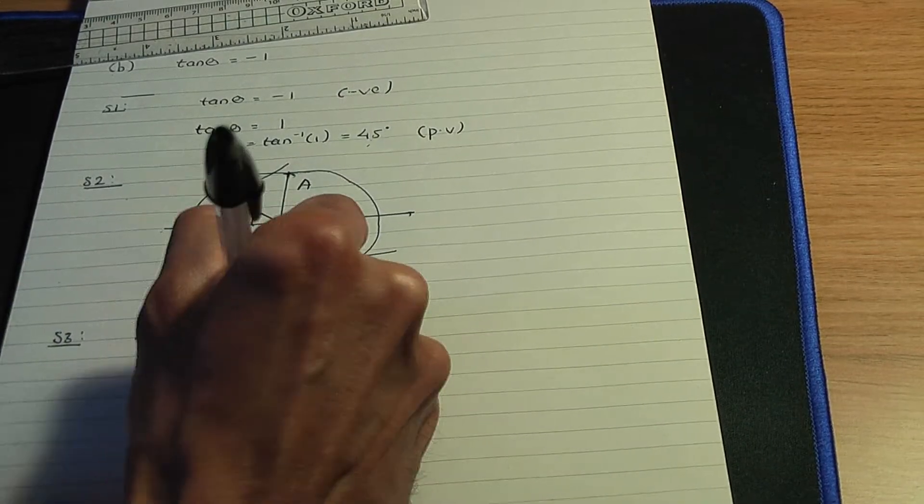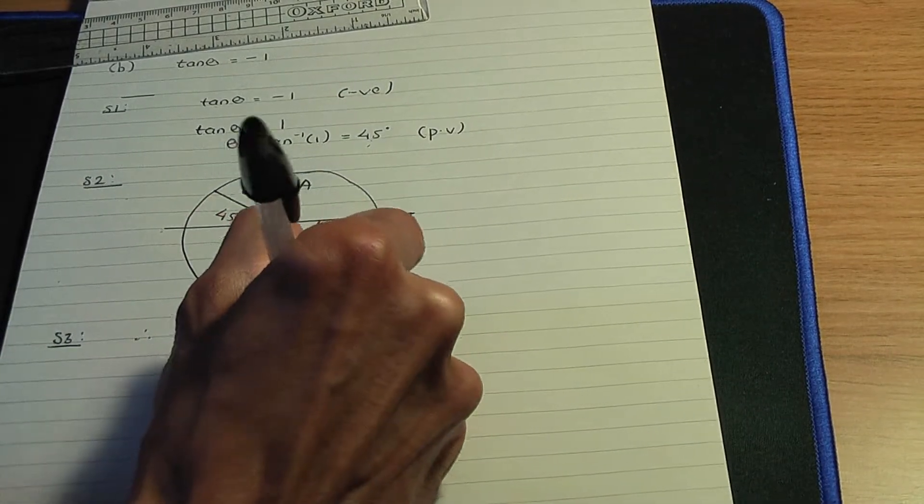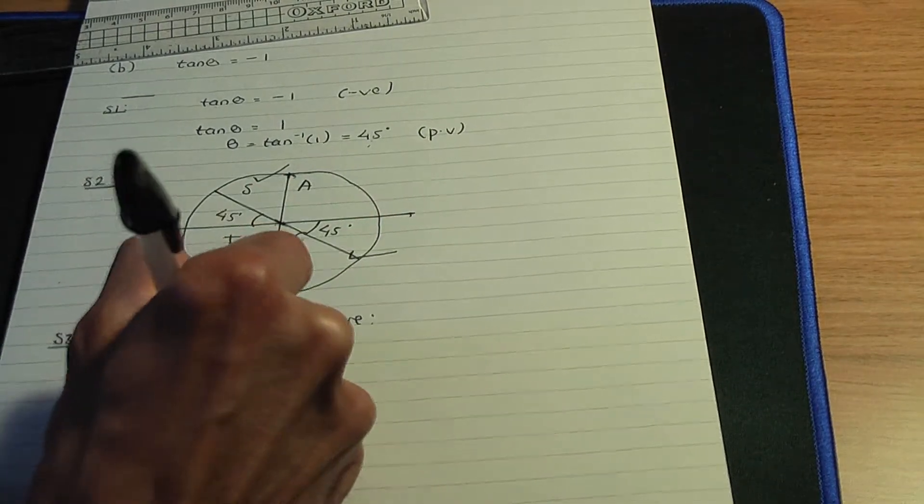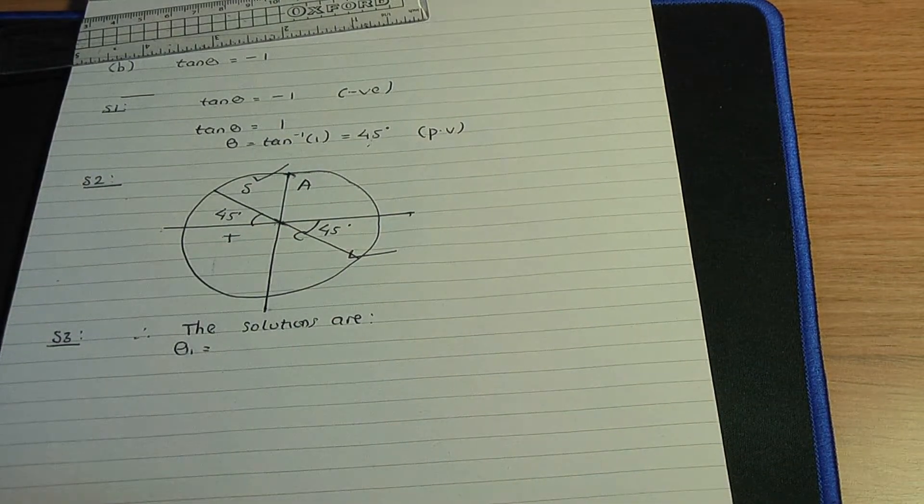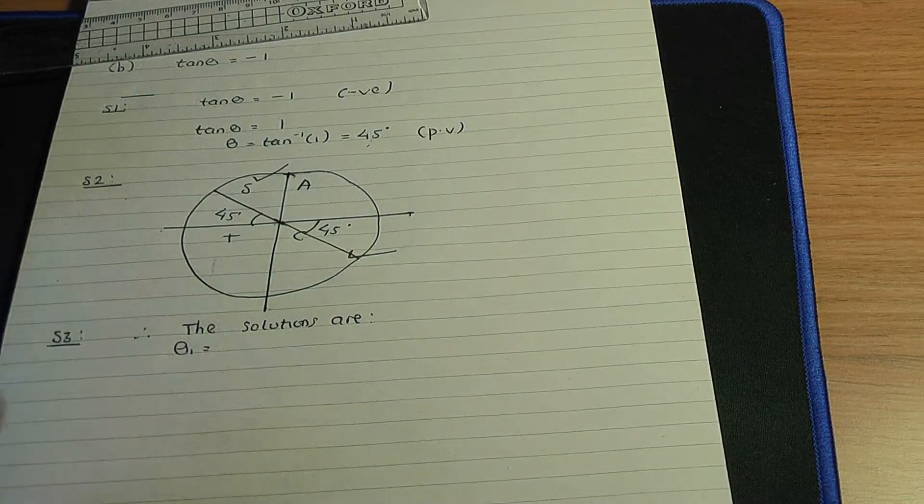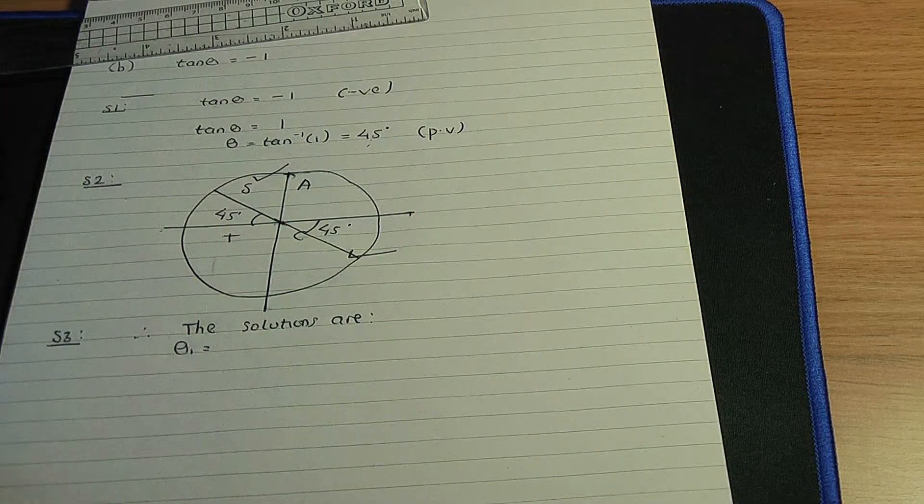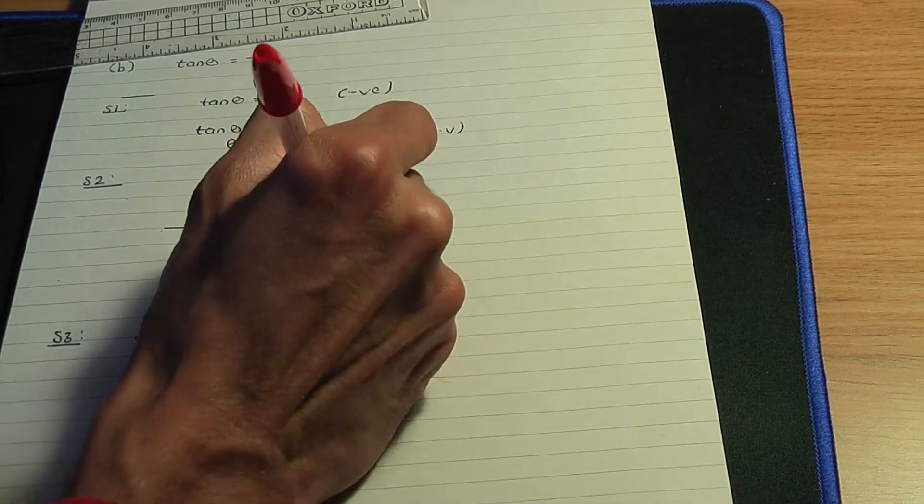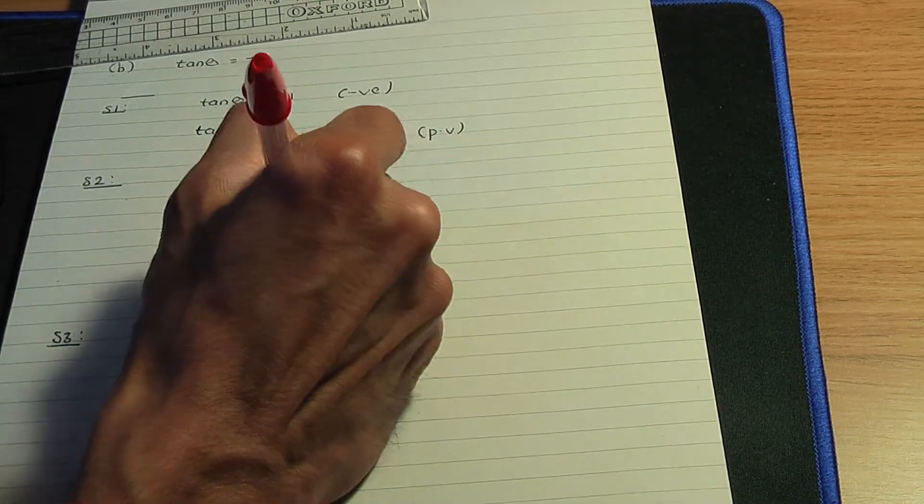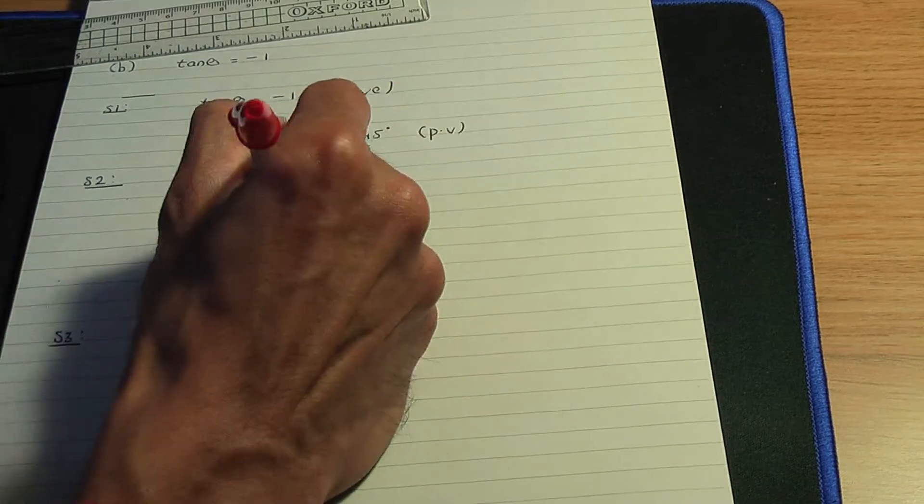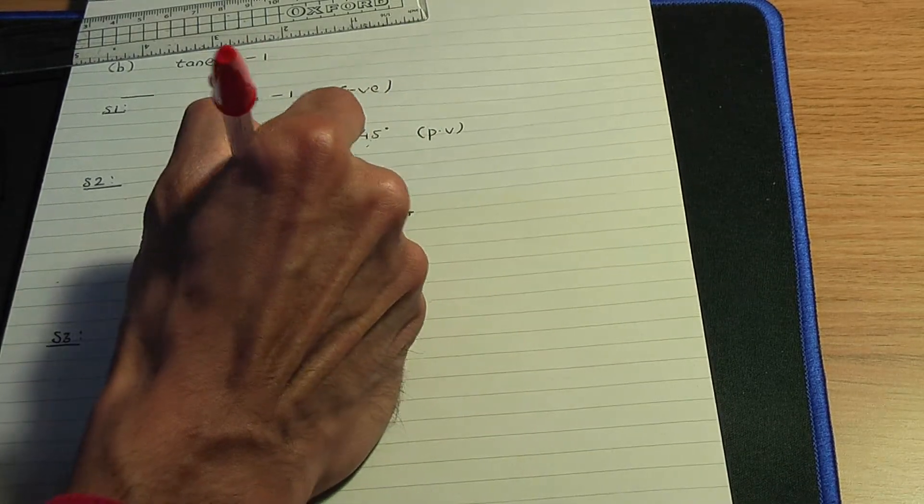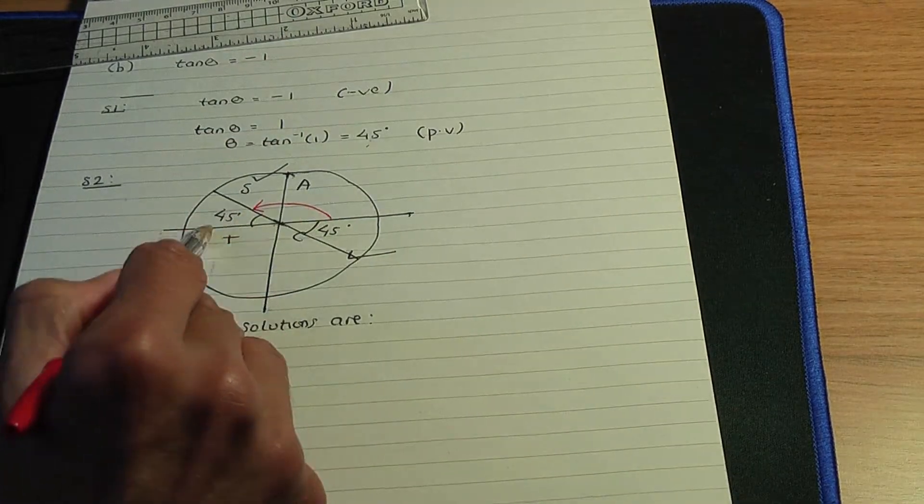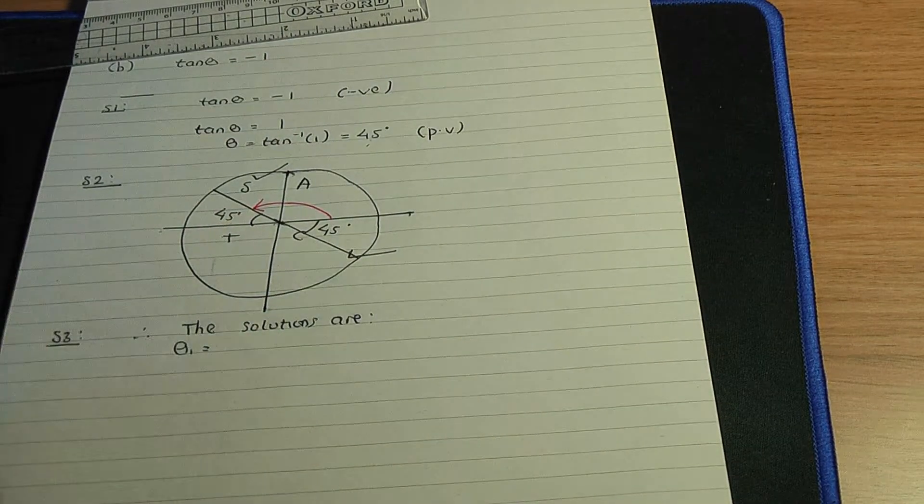So the first solution, I'll call that theta 1. And if I take a red pen, remember we measure our solutions from this initial line here. So we're looking for positive angles. So from the initial line in the anticlockwise direction until we strike this line over here. So that would be 180 minus 45 degrees.